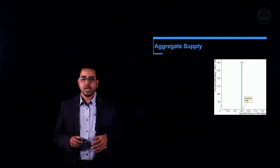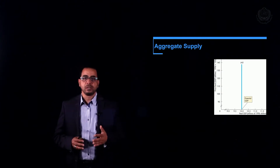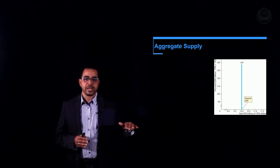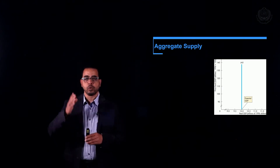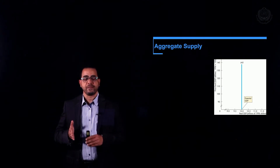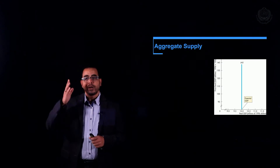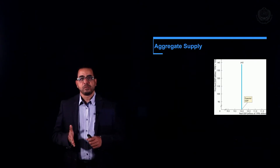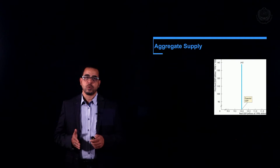The long-run aggregate supply curve looks like this: it's a vertical line. On the x-axis we have real GDP, and on the y-axis we have the price level. Being vertical means the long-run aggregate supply is unrelated to the price level.